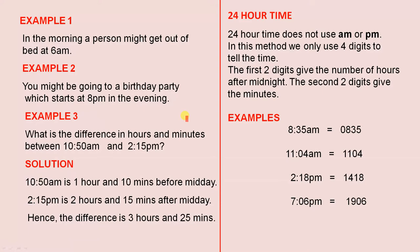Example 3: What is the difference in hours and minutes between 10:50 AM and 2:15 PM? The solution: 10:50 AM is 1 hour and 10 minutes before midday. 2:15 PM is 2 hours and 15 minutes after midday. Hence the difference is 3 hours and 25 minutes — you simply add 1 hour 10 minutes and 2 hours 15 minutes together.